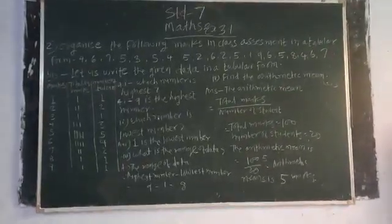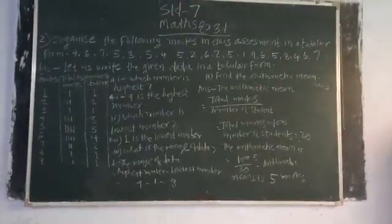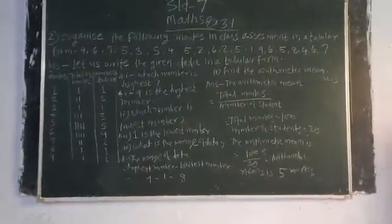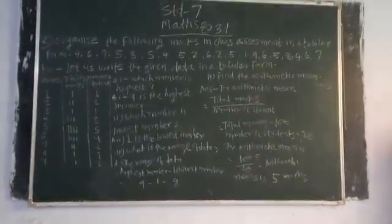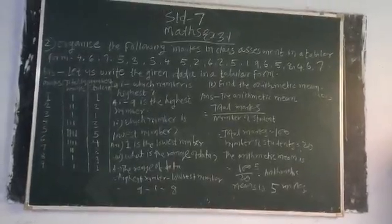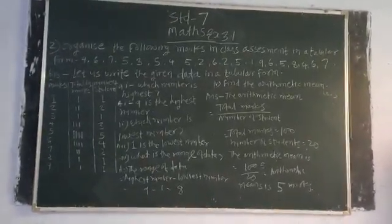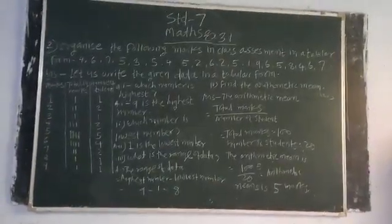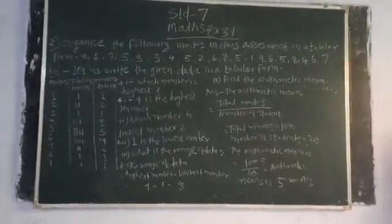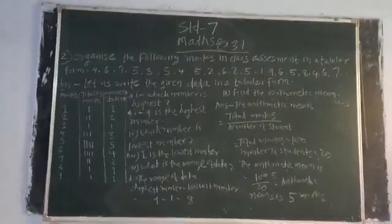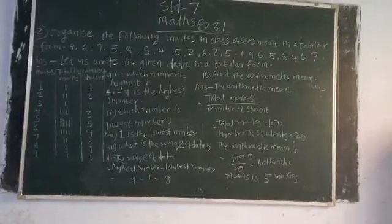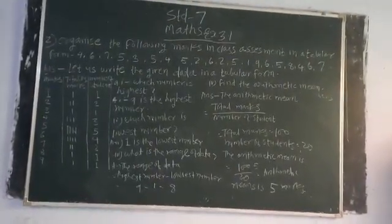Question number 1: which number is highest? The answer is 9 — 9 is the highest number. Question number 2: which number is the lowest? The highest is 9 and the lowest is 1. So 1 is the lowest number.